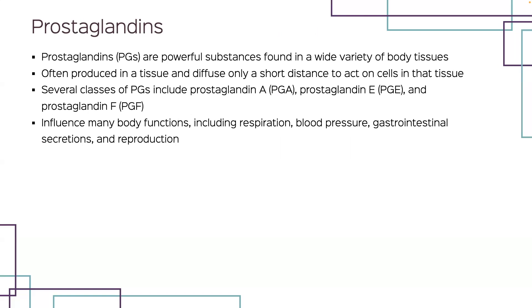Prostaglandins, or PGs, are tissue hormones — extremely powerful lipid substances found in a wide variety of tissues. PGs are modified versions of fatty acids, and they play an important role in communication and control of many bodily functions, but they do not meet the definition of a typical hormone. The term tissue hormone is appropriate because a PG is produced in a tissue and diffuses only a short distance to act on cells within that same tissue. Typical hormones influence activities of widely separated organs, whereas PGs influence activities of neighboring cells. They have profound effects on many bodily functions and will influence respiration, blood pressure, gastrointestinal secretions, inflammation, and the reproductive system.